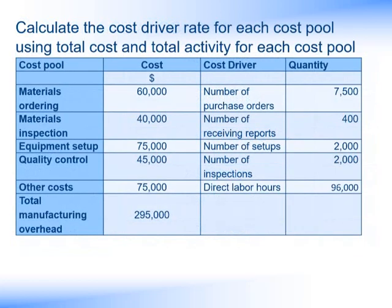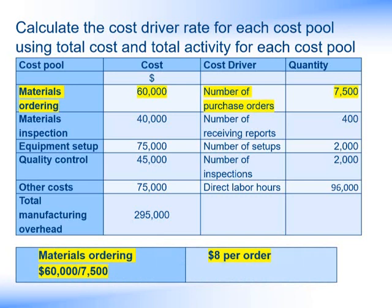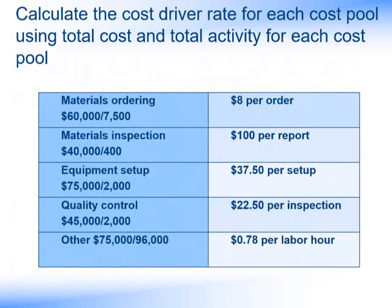The next step is to calculate the cost application rates. We take our total costs and divide by the total quantity. Taking materials ordering as an example, we have $60,000 of cost and an anticipated 7,500 orders to be raised, so dividing one by the other we arrive at a cost per order of $8. In effect, every time we raise an order related to a particular product, it's going to cost us $8. We can do this for materials inspection, equipment setups, quality control, and the other costs, arriving at a cost per order, cost per report, cost per setup, cost per inspection, and cost per direct labour hour. This gives us the ability to allocate overhead costs to each product based on the activities they incur.